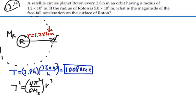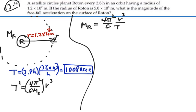times the radius of the orbit cubed. So rearranging this equation we would get the mass of Roton is equal to 4 pi squared over g times the radius of the orbit cubed over the period squared.